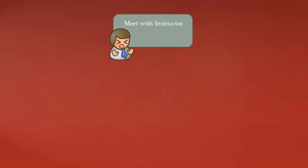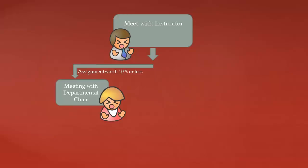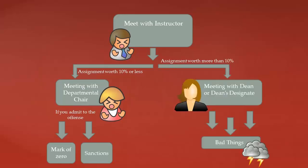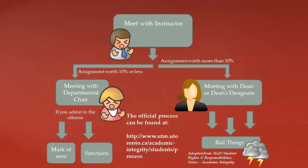At UTM, if you are suspected of an academic offence, which includes plagiarism, you first have to meet with your instructor. If the assessment is worth less than 10%, then you've got to meet with your departmental chair and you could get a mark of zero or get referred to the Dean for sanctions. If the assessment is worth more than 10%, that means you have to meet with the Dean or the Dean's designate.